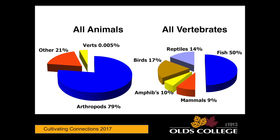Plants and everything else is 21%. But even among the vertebrates, things with hair and nipples are only 9%.